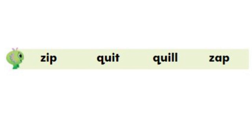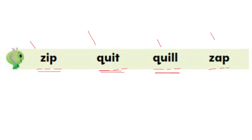Now let's take a look at these words and read them together. Some of them might have the letter Z or the letter Q. Look at the first one: zip. Now the second one: quit. The third one: quil. And the last one: zap.